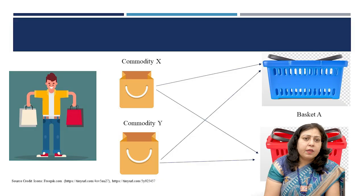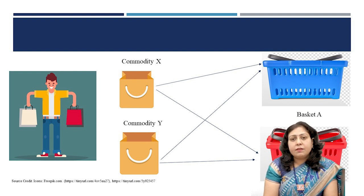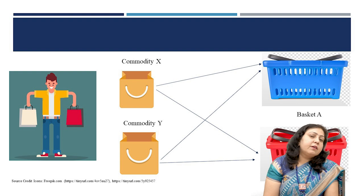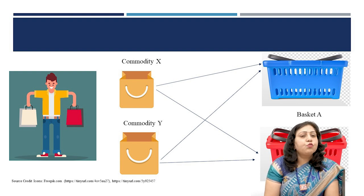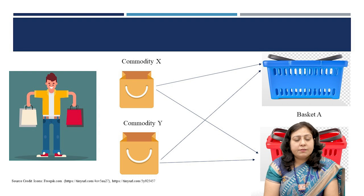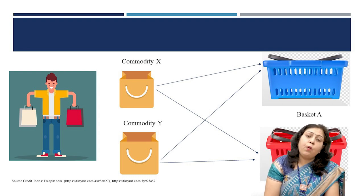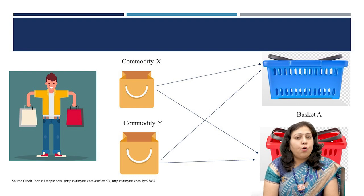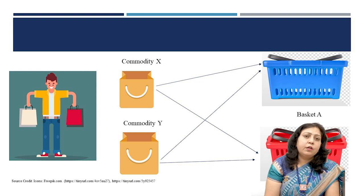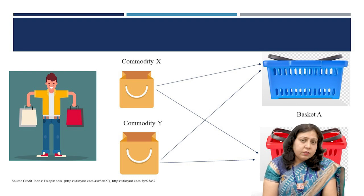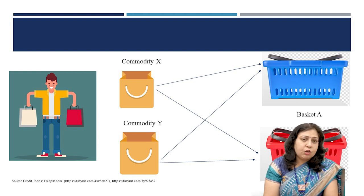Given the budgetary constraint and alternative baskets of goods having the same price, if a consumer chooses a particular basket, he reveals his preference. Let us take an example. Mr. P has a given income which he spends on two commodities, namely commodity X and commodity Y. There are two alternative options, basket A and basket B. Both baskets are the same price or equally expensive.